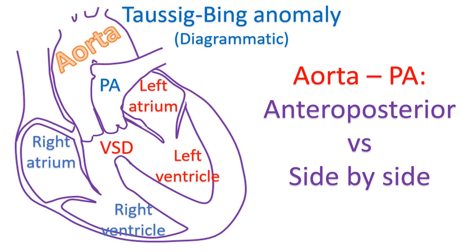Yacoub and Radley-Smith have classified the coronary anatomy into 5 types in transposition of great arteries. The same can be applied in the setting of Taussig-Bing anomaly when an arterial switch operation is planned. The types are Types A to E.